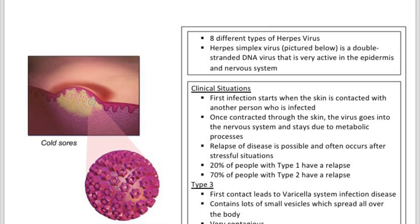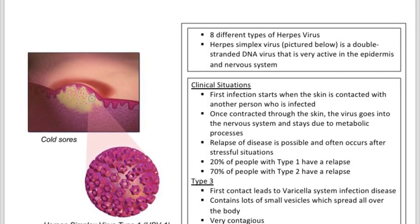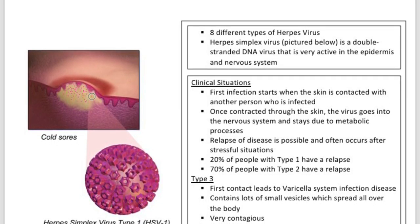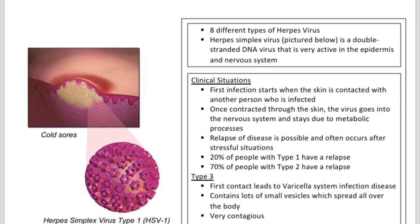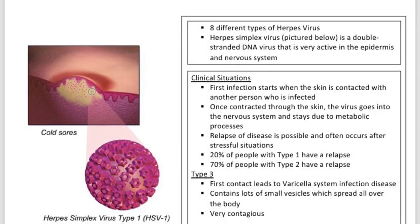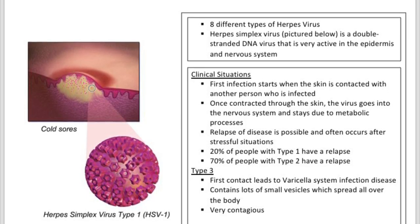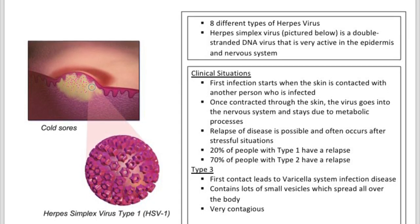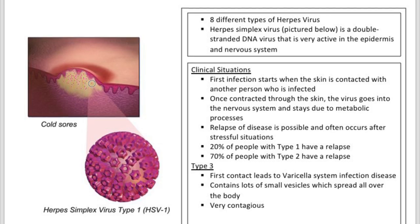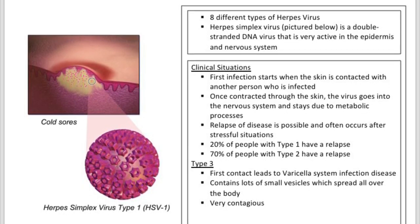The first infection of herpes virus starts when the skin is contacted with another person who is infected. Once contracted through the skin, the virus goes into the nervous system and stays there. Due to the metabolic processes of the nervous system, a relapse of the disease is possible and often occurs after stressful situations.